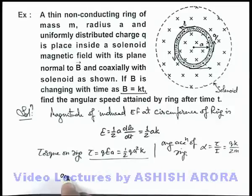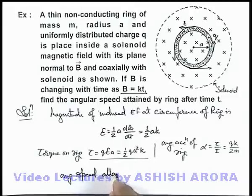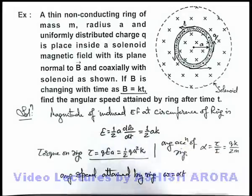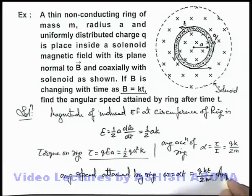And angular speed attained by ring after time t, omega can be written as alpha t, because initially we consider the ring to be at rest. So this'll be qkt/(2m), that'll be the answer to this problem.